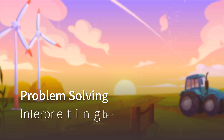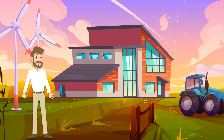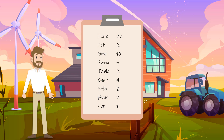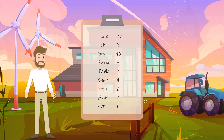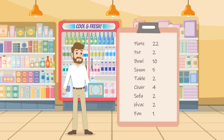Problem Solving: Interpreting the Remainder. After designing the floor plan, Uncle Josh started working on furnishing his house. He made a shopping list before, and he would purchase new furniture and kitchen accessories according to this list. He went to the supermarket nearby and picked up some plates in the kitchen corner. He was interested in a type of porcelain plate, which was only sold in boxes.